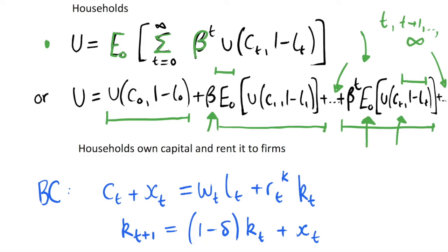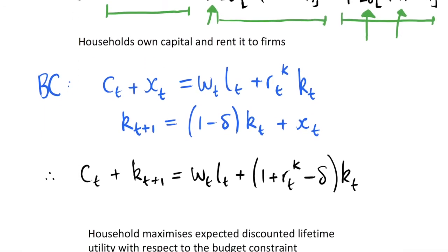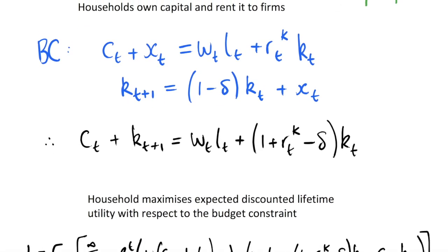If we want to maximize our utility function, we have to maximize it with respect to a budget constraint. Otherwise we would just spend infinite amounts of consumption and work not at all and we'd have infinite utility, and that wouldn't be a very interesting problem because that's not realistic. So we need a budget constraint, and we make this assumption for our budget constraint that we have households owning capital and they rent it to firms. This means that the households actually get this rental rate of capital. They get some income from the capital that they rent out.